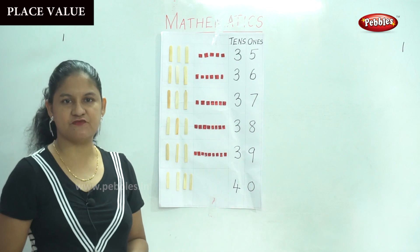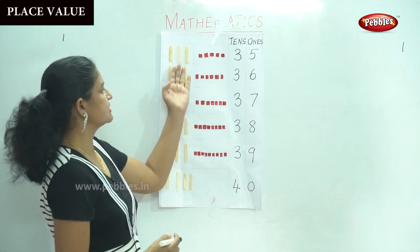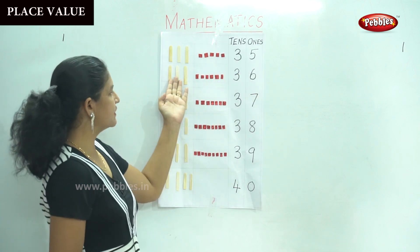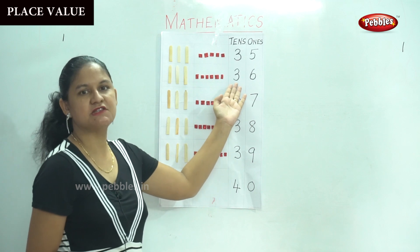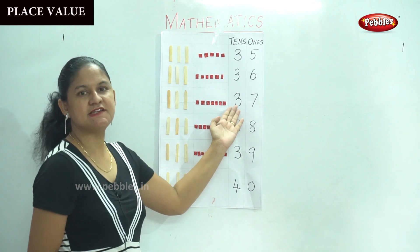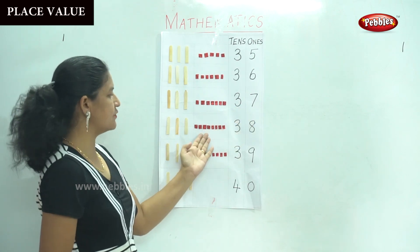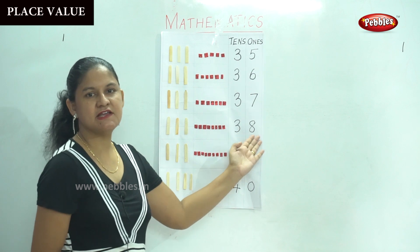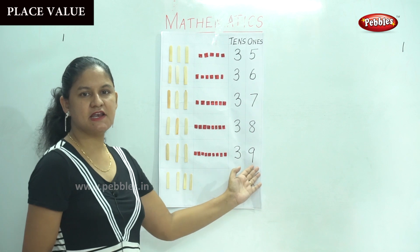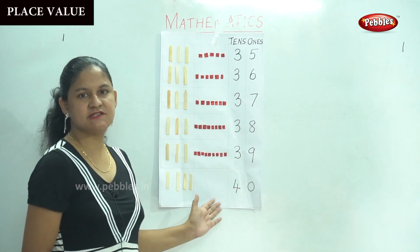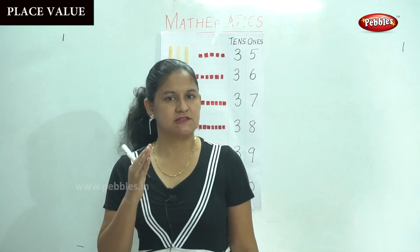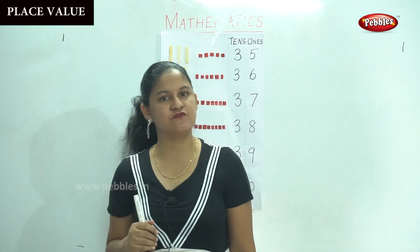So shall we see numbers thirty-five to forty again? Yes. So this is three tens, five ones, which is thirty-five. Three tens, six ones, which is number thirty-six. Three tens, seven ones — number thirty-seven. Three tens, eight ones — number thirty-eight. Three tens, nine ones — number thirty-nine. And four tens and zero ones, which is number forty. So we have seen the place value for the numbers thirty to forty. You will be able to do other activities as well.